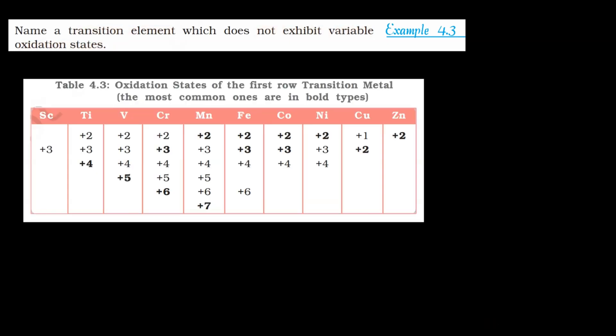Kaise bataenge beta, dekho, aapki NCERT mein ye ek table given hai - oxidation states of the first row transition metals and isme niche bhi kuch likha hai, the most common ones are in bold types. To yahan pe sare ke sare 3D elements given hain aapko aur sabki oxidation state bhi given hai.